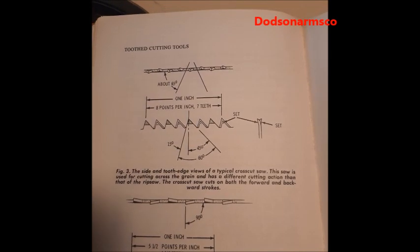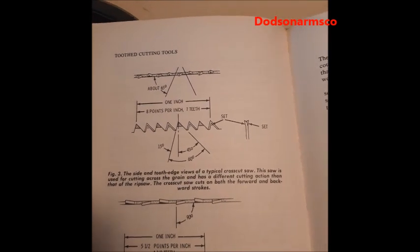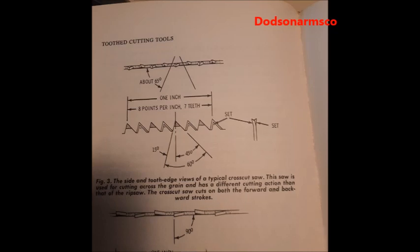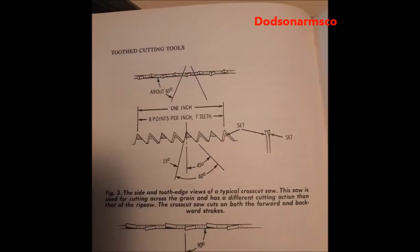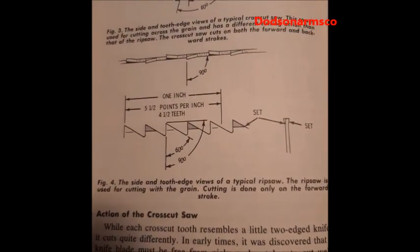If you look here, this is a great illustration. It shows you the difference in the teeth and the layout of the blade in a cross-cut saw versus a rip saw.